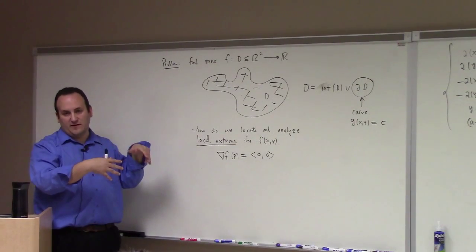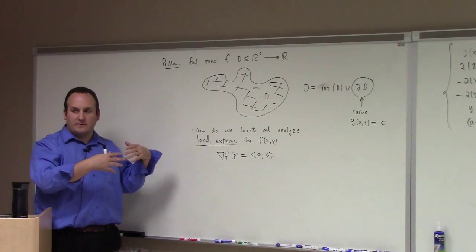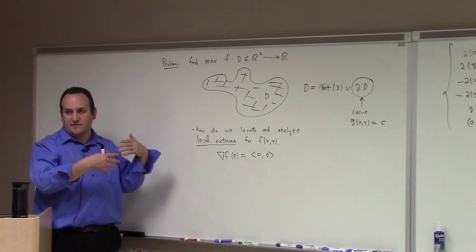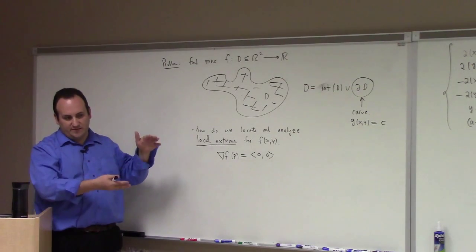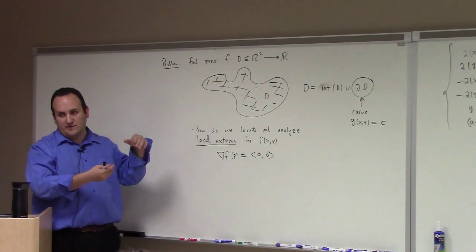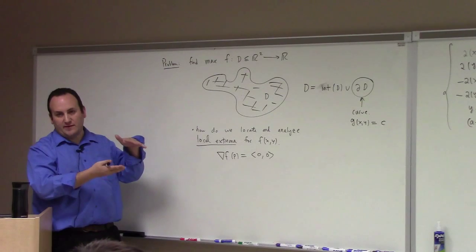You can use the method of Lagrange multipliers on the constraint manifold to find maximums on the boundary. And then on the interior, you can look for where the gradient of the function of several variables is zero. Then you just look at a list of winners and losers at either the critical points in the interior or the winners of the Lagrange multiplier process on the boundary.